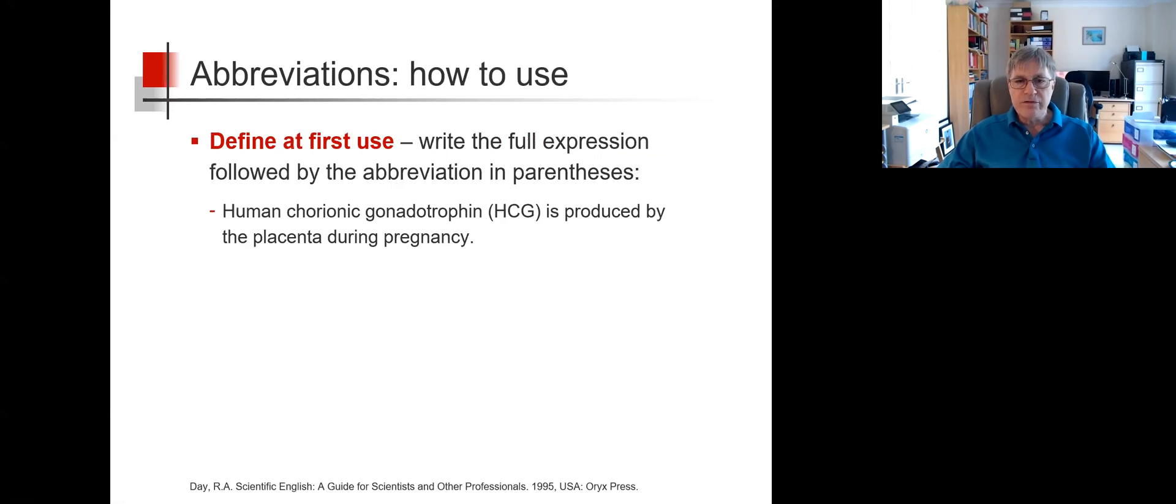So define an abbreviation at first use. Write the full expression followed by the abbreviation in parentheses. Human chorionic gonadotrophin (HCG) is produced by the placenta during pregnancy.